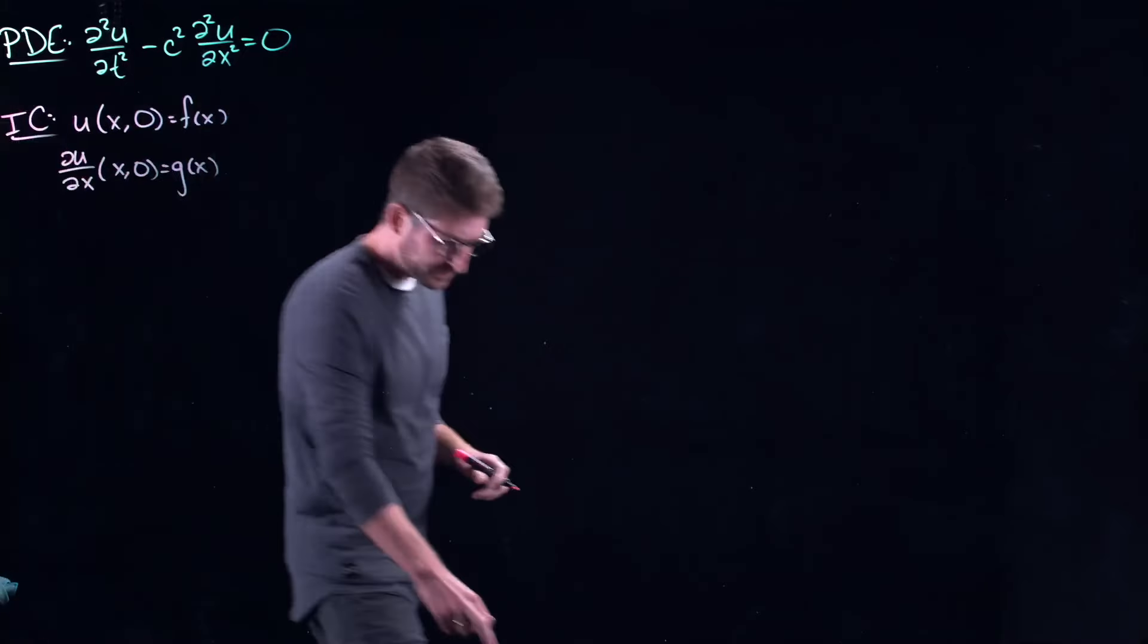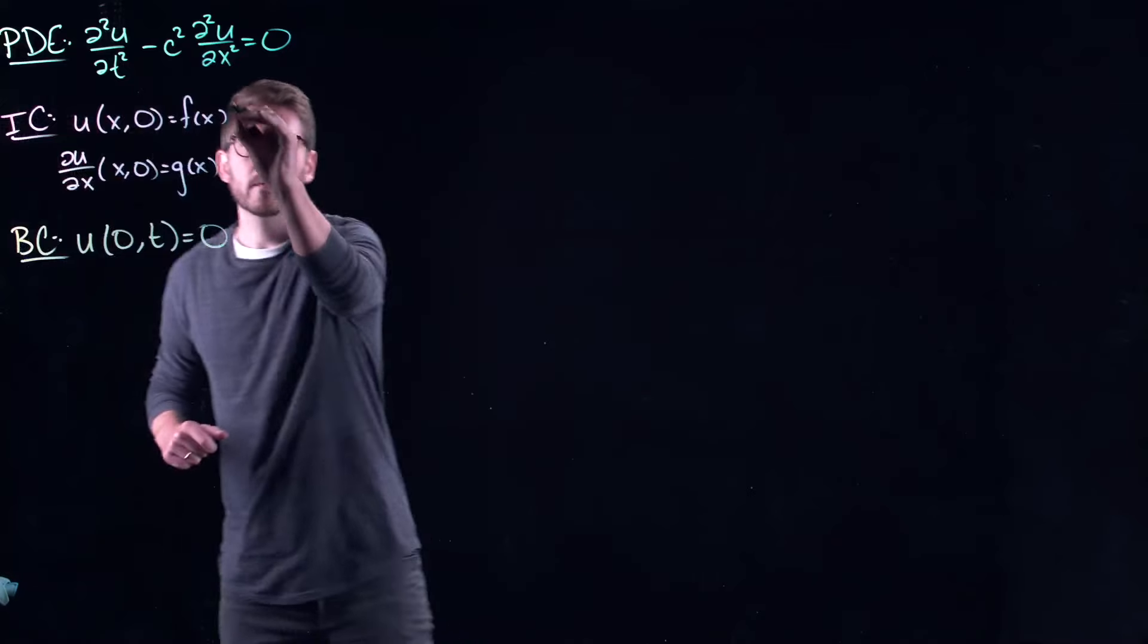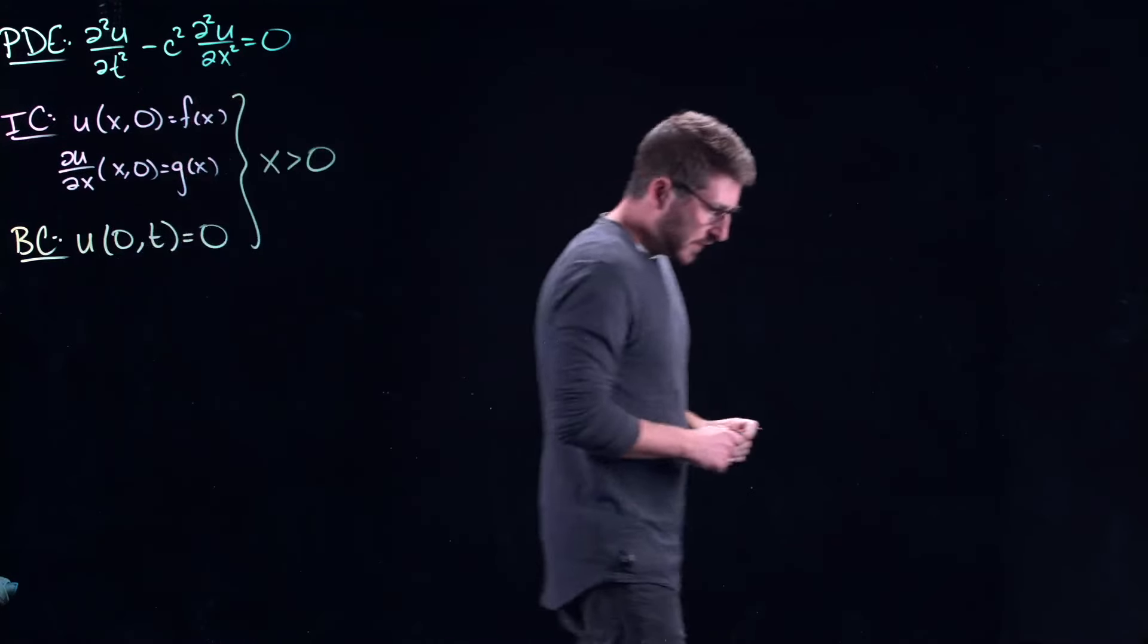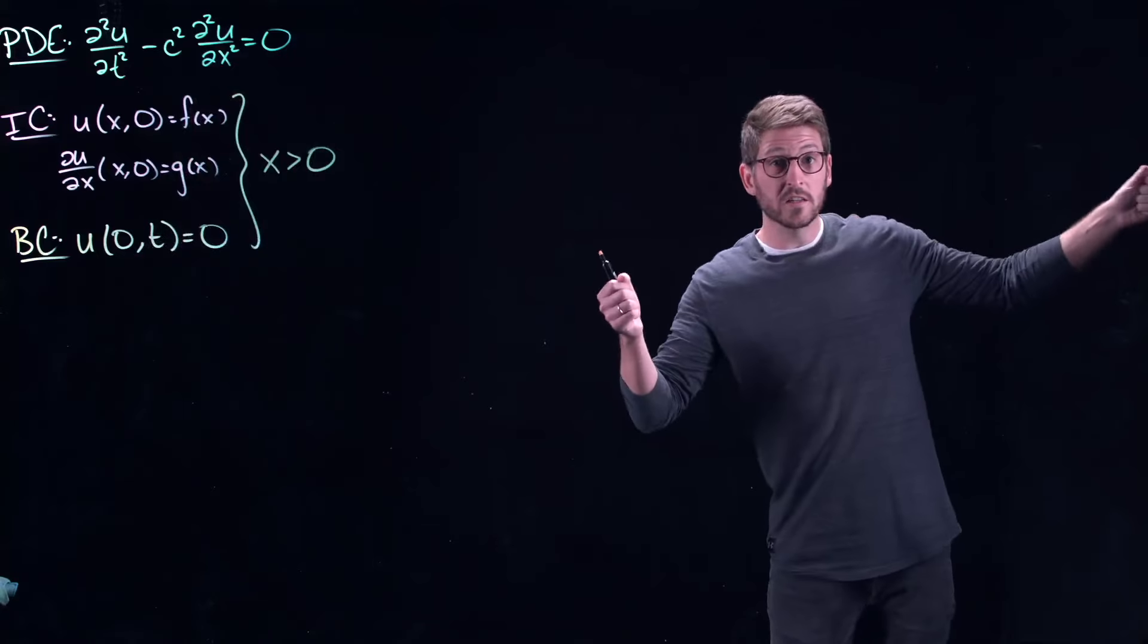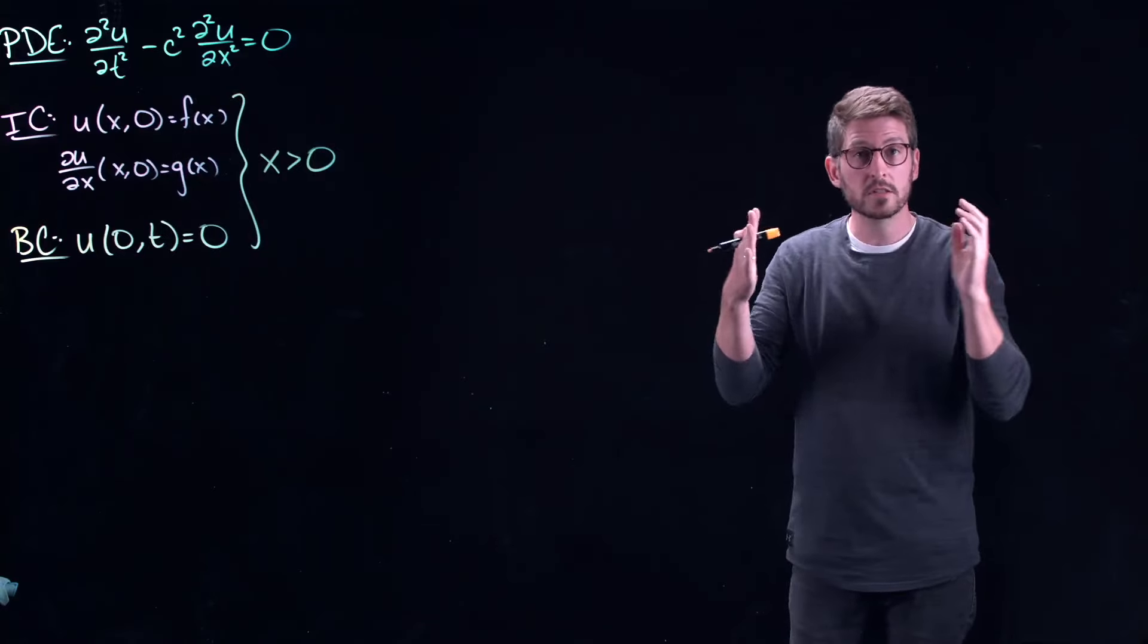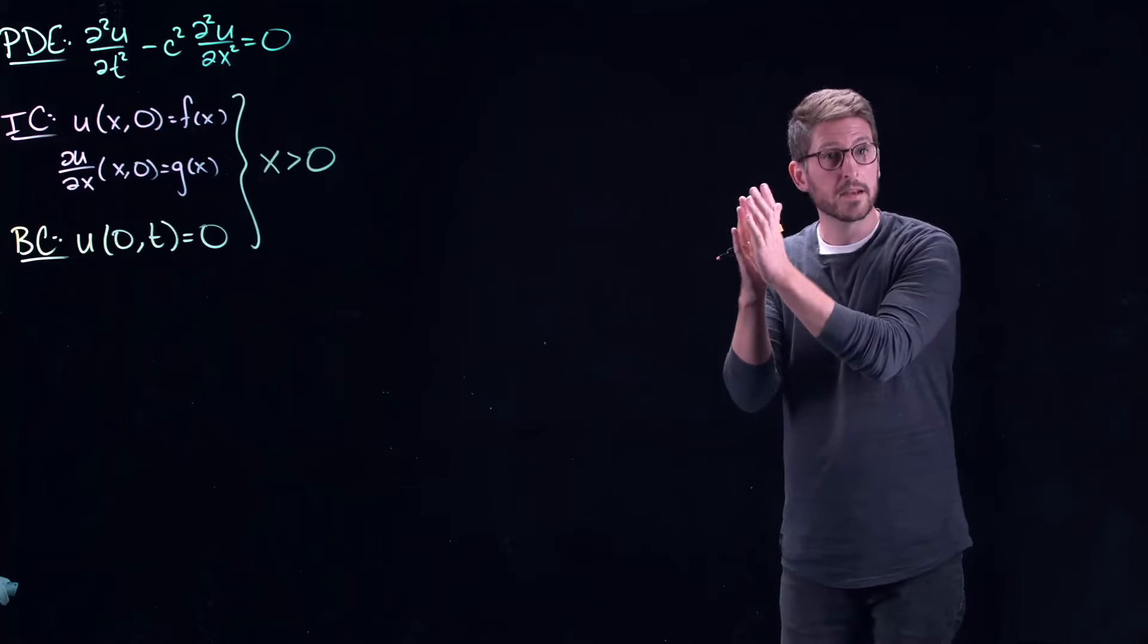But also let's look at a boundary condition. So I'm going to look at one pinned boundary here. So there's two ways that you can interpret this. In this case x is going to be greater than zero. You could think about this as an infinitely long line with just one boundary.